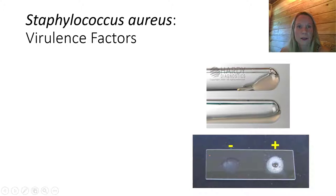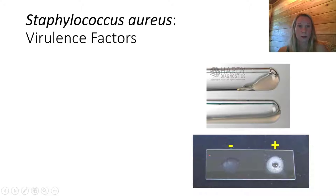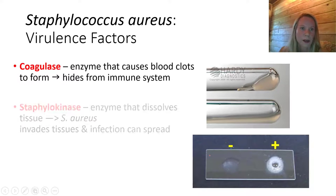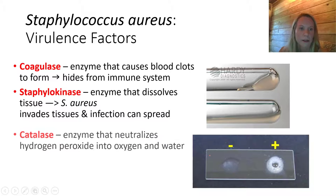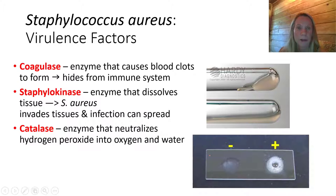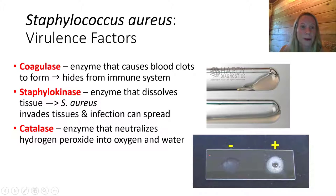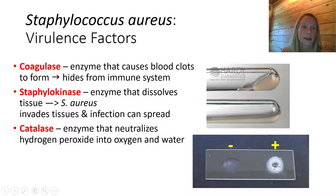Now let's talk about Staphylococcus. We're going to start with Staphylococcus aureus — its virulence factors, a collection of certain enzymes. Remember, enzymes are a type of virulence factor. We know enzymes by their nomenclature — they end in that -ase suffix.